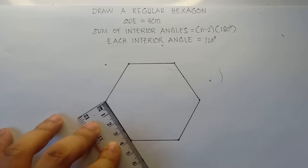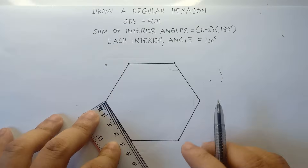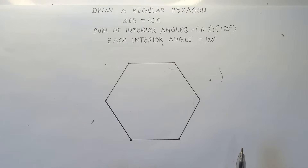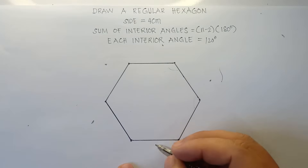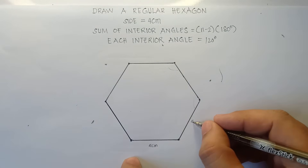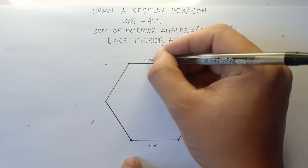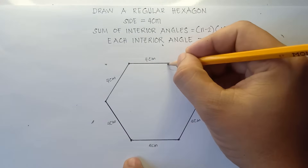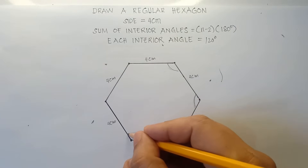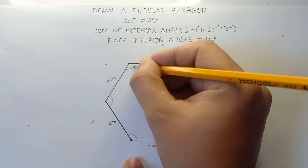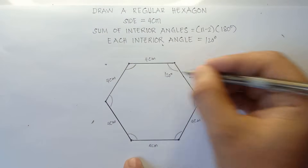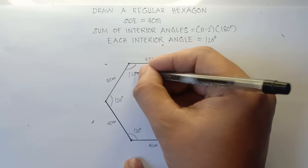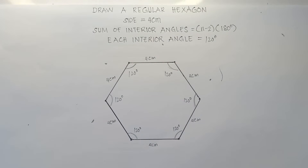All set. That's how you draw a regular hexagon. Do not forget to label, because in some cases the teacher will ask you to label your regular hexagon. For the sides, we have 4 centimeters each side — 4 centimeters, 4 centimeters, 4 centimeters, and 4 centimeters. For the angles, that would be 120 degrees each. We have 6 interior angles, all equal: 120°, 120°, 120°, 120°, 120°, and 120°. That's how you draw a regular hexagon.